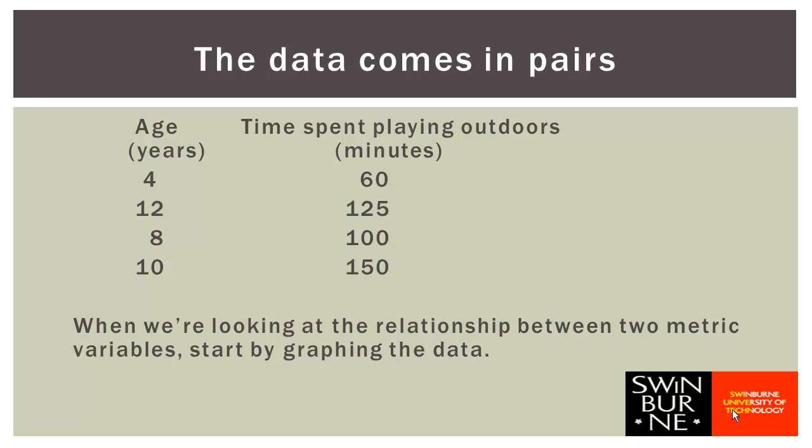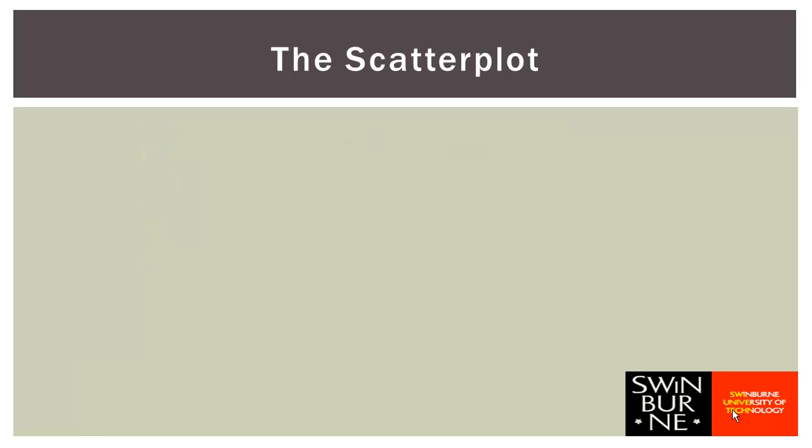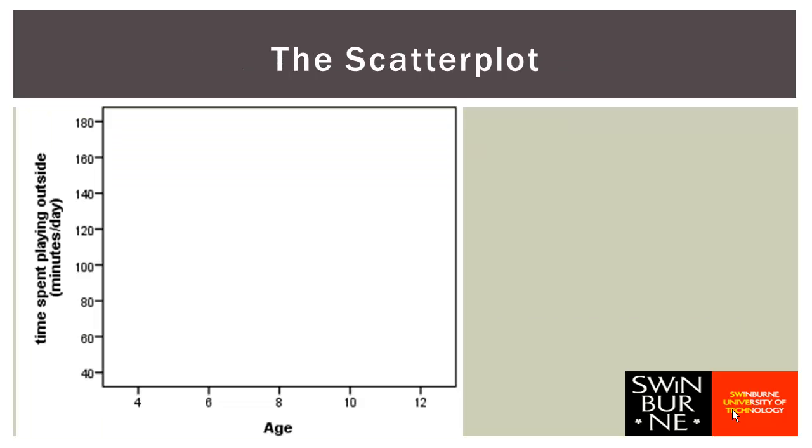To test that hypothesis we have collected some data — here are the first four cases. We have recorded the age and time spent playing outdoors for each of four children. When looking at the relationship between two metric variables like this, we start with a graph called a scatter plot. There are strong conventions: the dependent variable goes on the vertical axis and the independent variable goes on the horizontal axis. So our scatter plot will have age on the horizontal axis and time spent playing outside on the vertical axis.